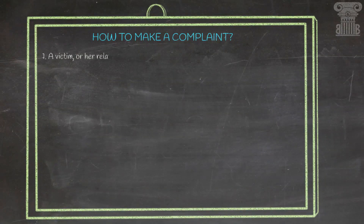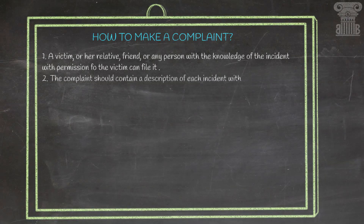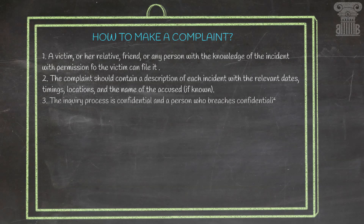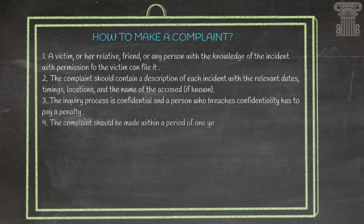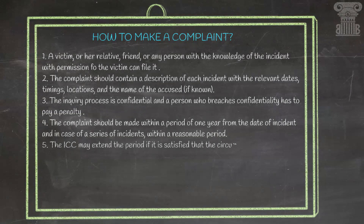Let me now talk about how to make a complaint under the POSH Act. A complaint can be made by the victim, or by her relative, friend, or any other person with knowledge of the incident and with the permission of the victim. The complaint should contain a description of each incident with relevant dates and timings. The inquiry process under this act is confidential, and any person who breaches this confidentiality will have to pay a penalty. The complaint should be made within a period of one year from the date of the incident.